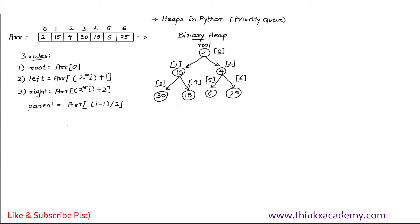This heap as-is is not particularly useful. To make it useful, we can build two different types: a max heap and a min heap. These are very useful when implementing a heap as a priority queue, where the first element has either the highest or minimum priority.